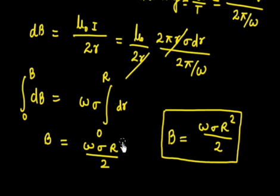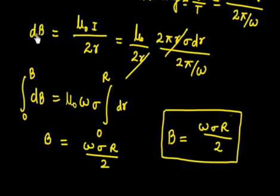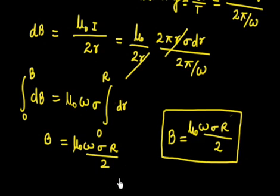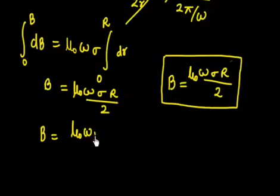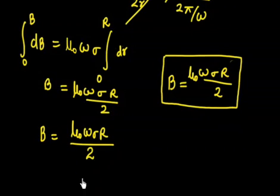Also including the μ₀ factor that was left out, the final magnetic field at the center is: B = μ₀·ω·σ·R / 2. This is the magnetic field induced at the center due to the revolution of the charges.